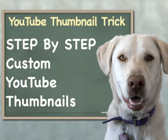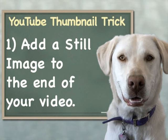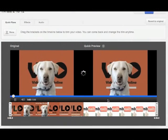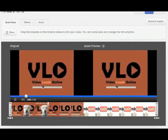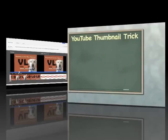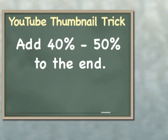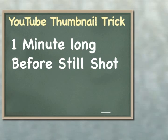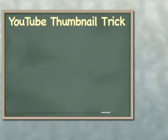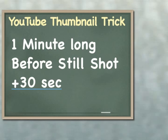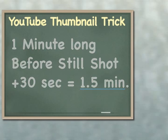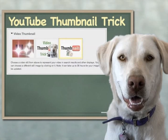Now we get to the step-by-step guide on how to make your own custom YouTube thumbnail. Create your video the way you normally do, but also make a still image that looks like the thumbnail you want. Add that still image to the very end of your video and make it last a long time — about half the length again of your video before it was added. So if your video without the still shot is one minute long, make the still shot 30 seconds long, making the overall video one and a half minutes. You want enough of the still shot so YouTube makes it one of your three thumbnail choices.